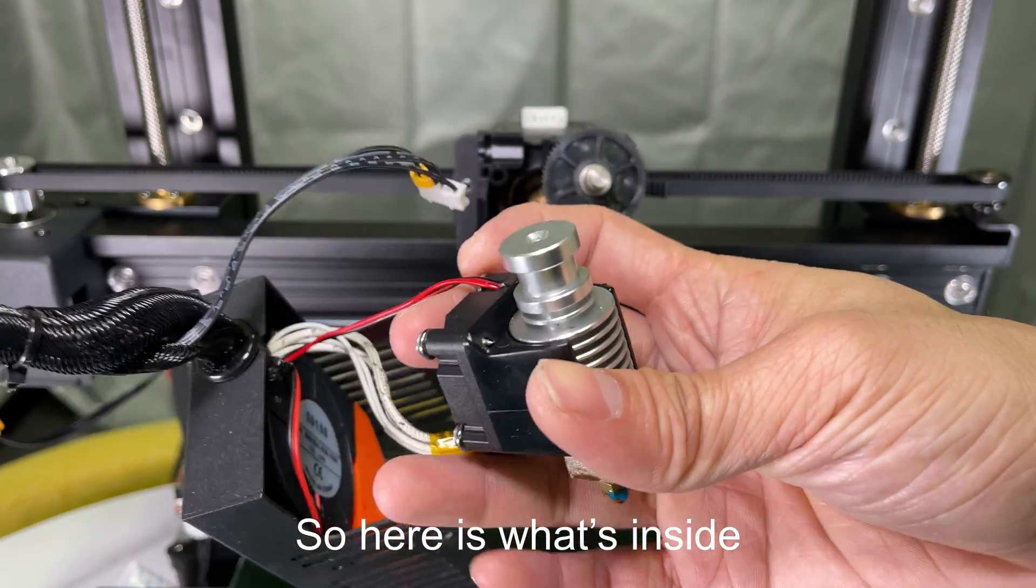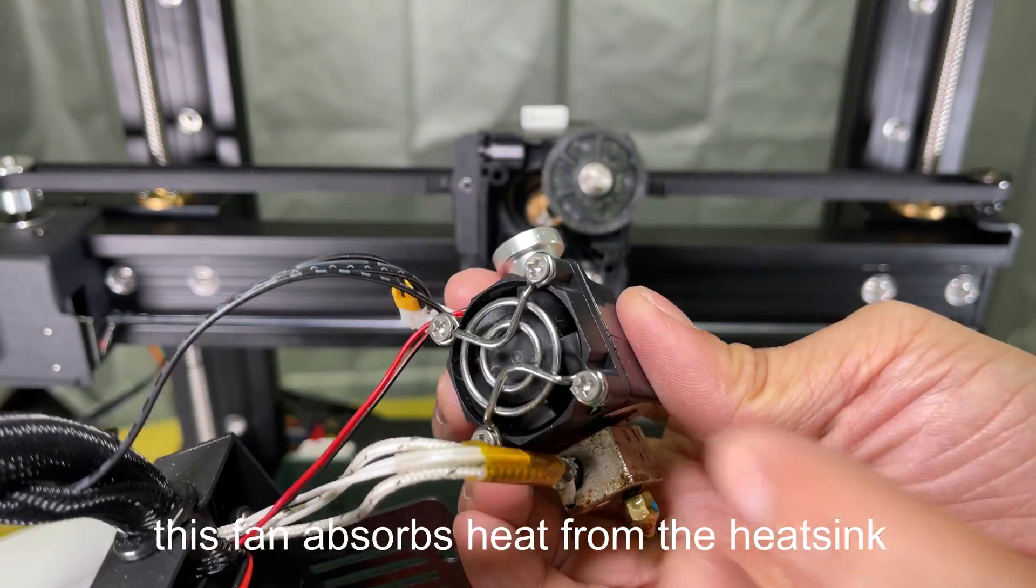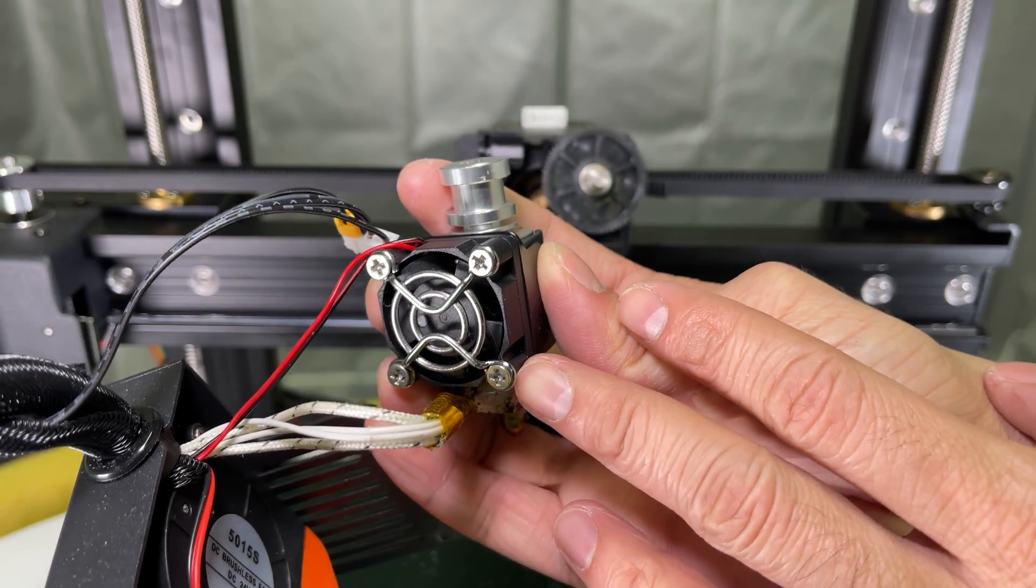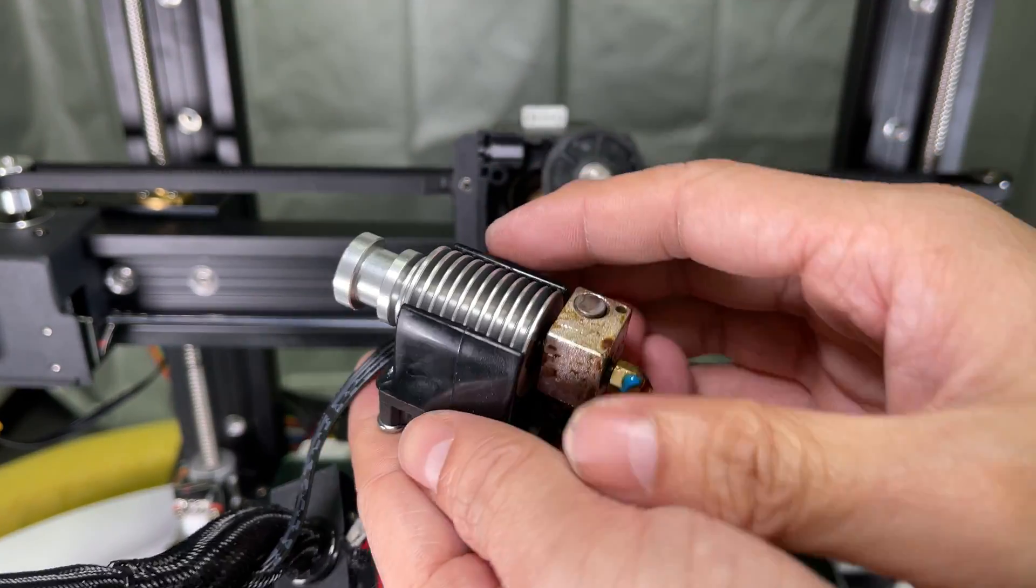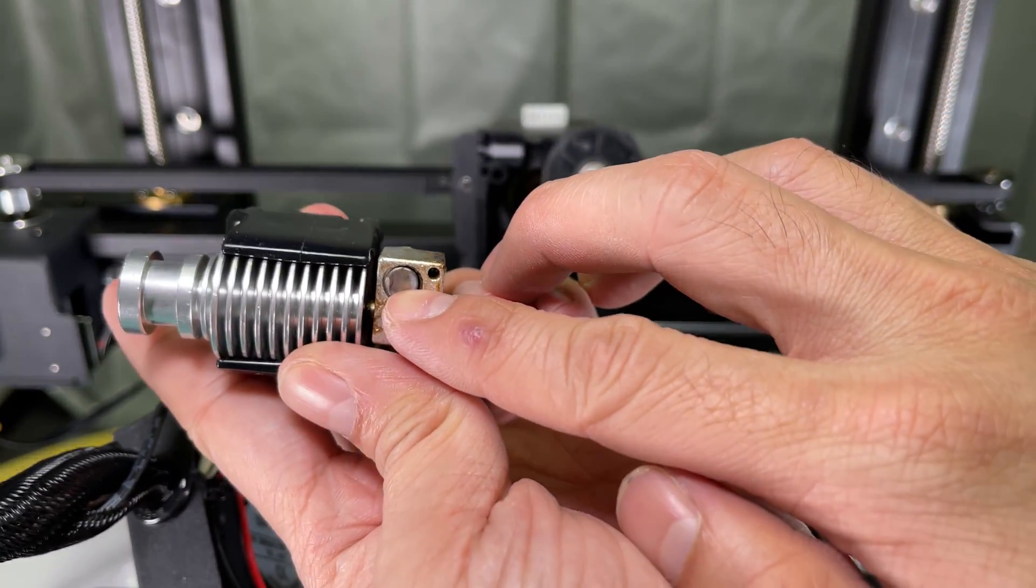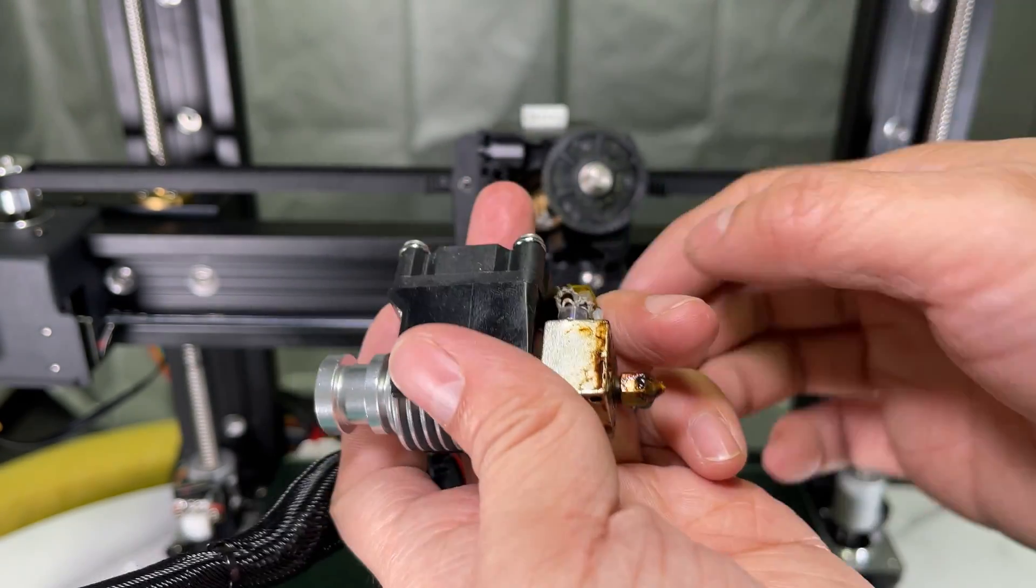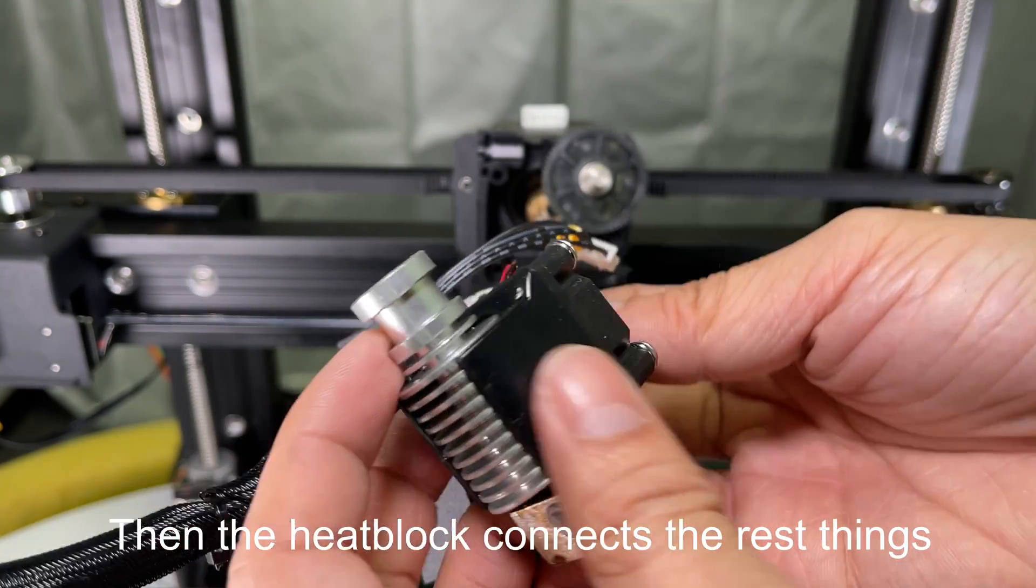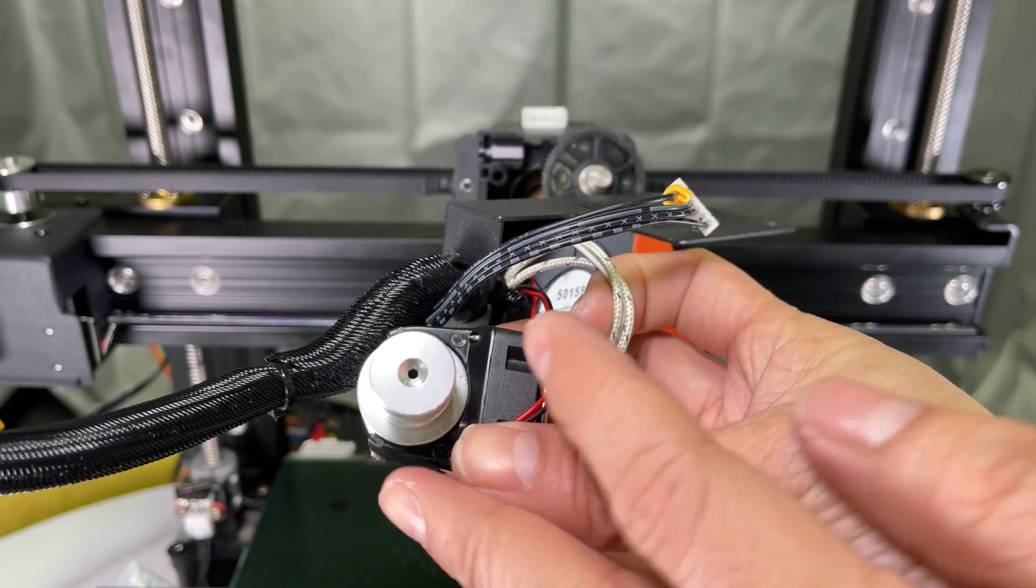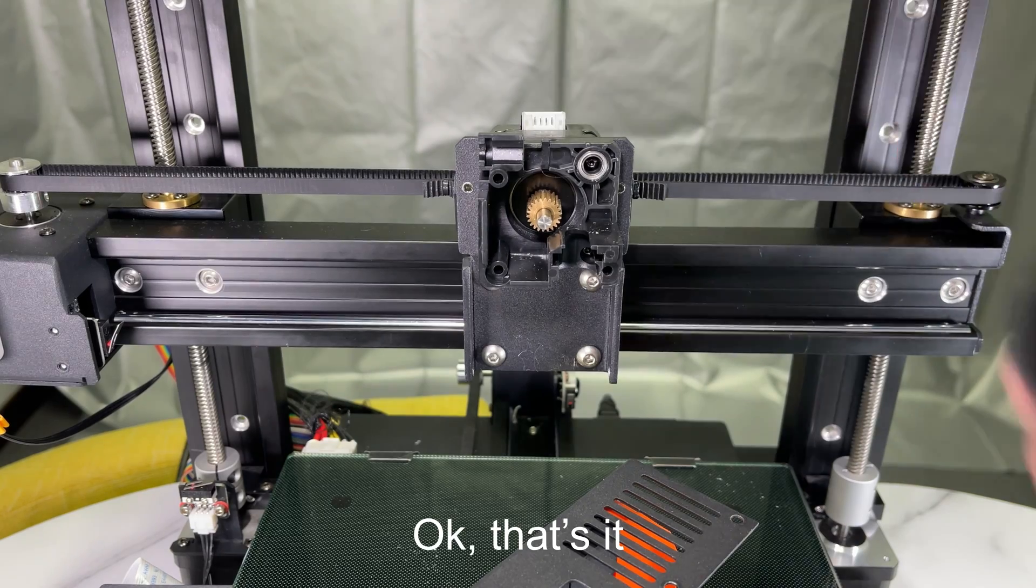So here is what's inside. This fan absorbs heat from the heatsink so that the PTFE tube won't get melted. Then the heat block connects the rest of the components. Okay, that's it.